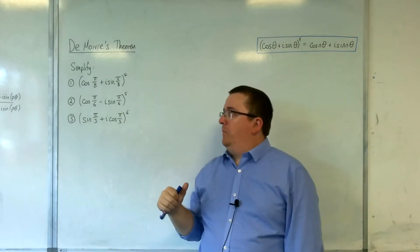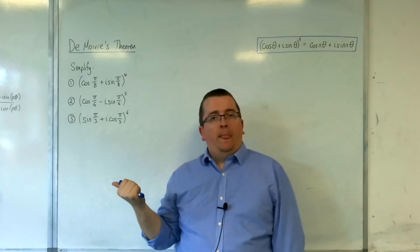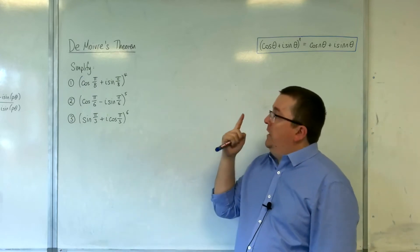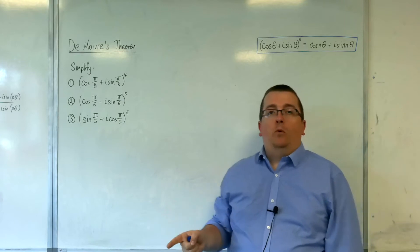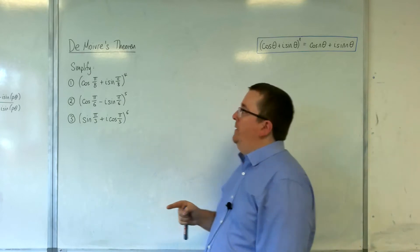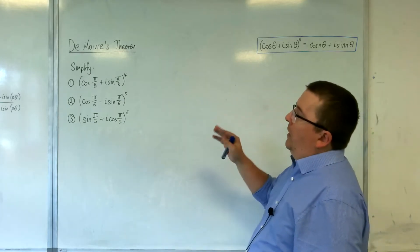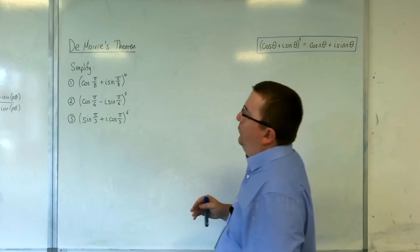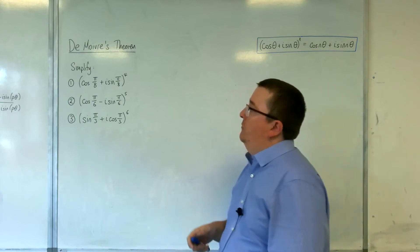The first one is bog standard. The next two require a little bit more thought and care. So the first one, nice and straightforward then: cosine of π over 8 plus i sine π over 8 to the power of 4.